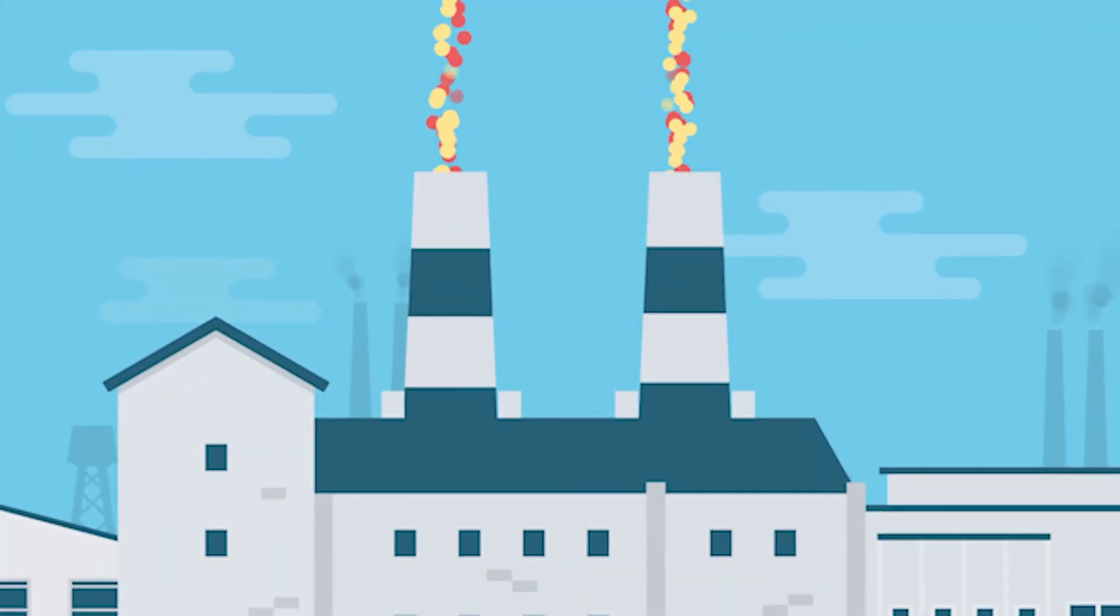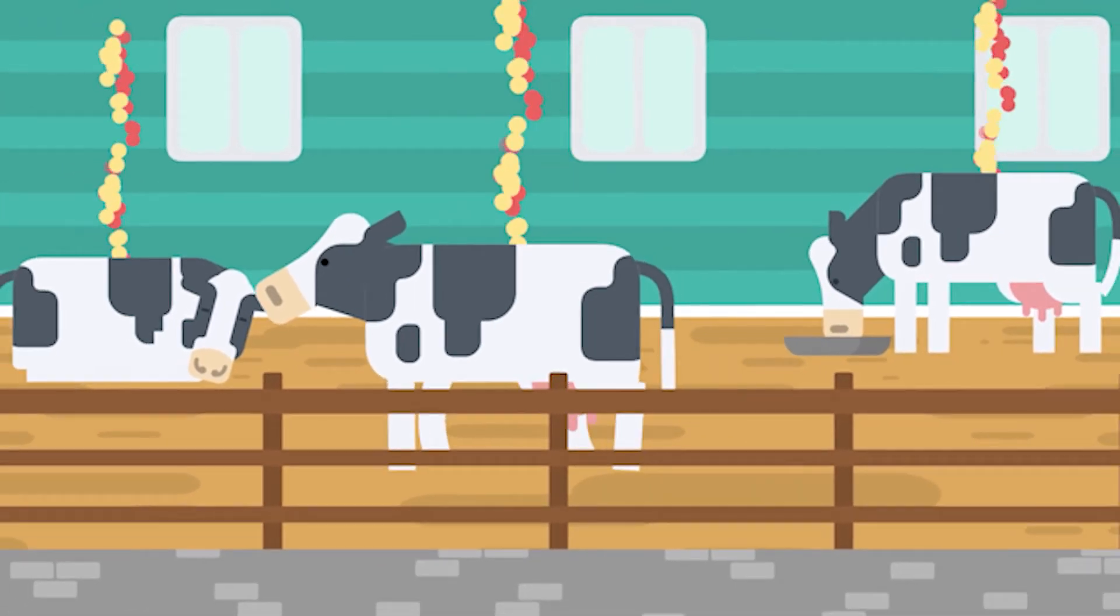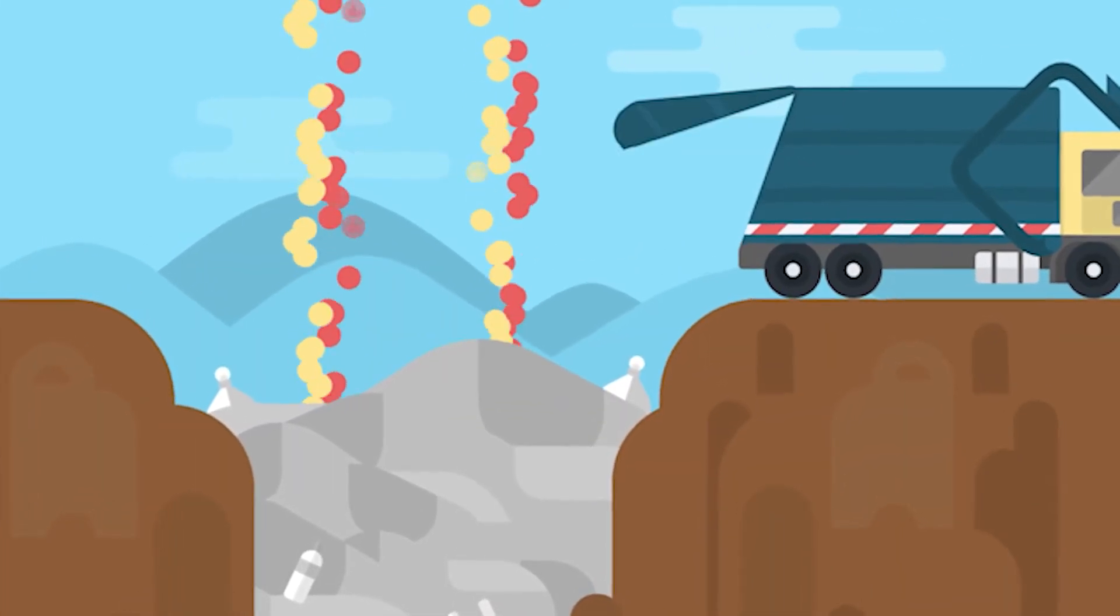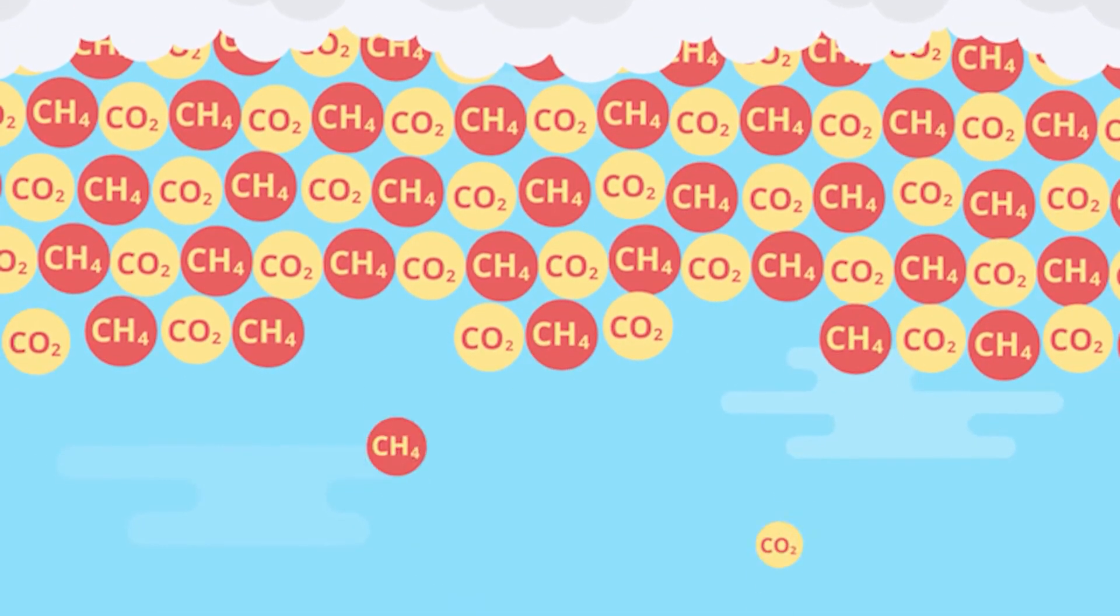By burning fossil fuels to power our civilization, producing our food through industrial farming and careless disposal of waste, we are filling the atmosphere with greenhouse gases faster than the Earth's ability to remove them.